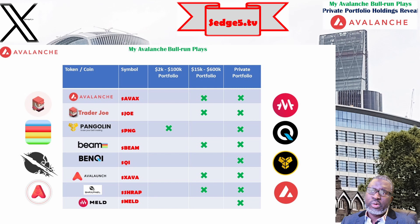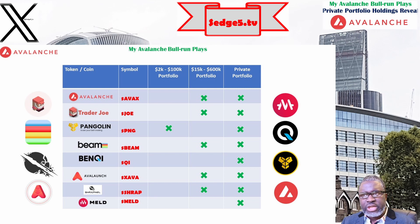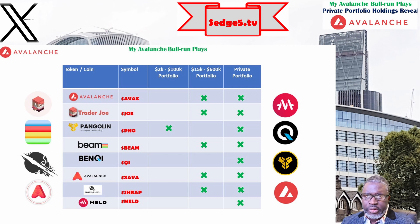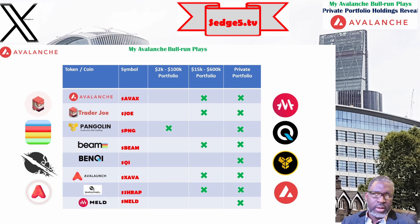Next I have Shrapnel, a first-person shooter game on the Avalanche blockchain. This gaming project features in our 15k to 600k crypto portfolio challenge and I also hold it within my private portfolio. I think I'll keep adding to my bag as long as the price stays under 50 cents — I think it will do well. Do you hold Shrapnel? Let us know in the comment section.